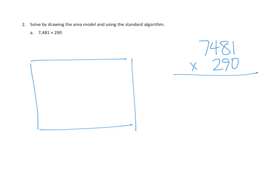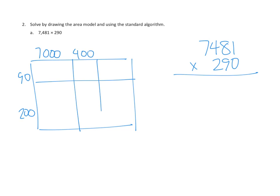We don't have any ones, so really all we have are 90 and 200 — that's 290 broken down by place value: 200s, 9 tens, no ones. For our other part, we've got four parts: thousands, hundreds, tens, and ones. So we've got 7,000s, 480s, and 1s.